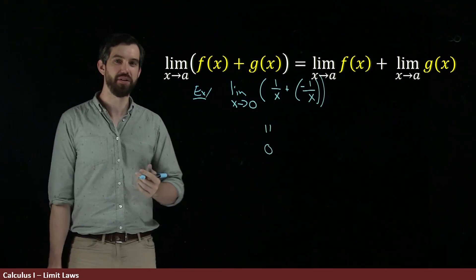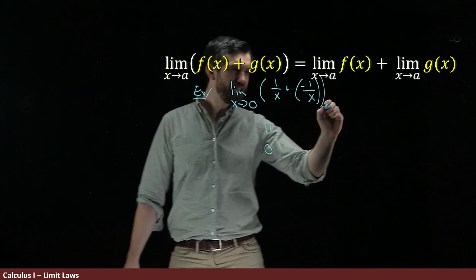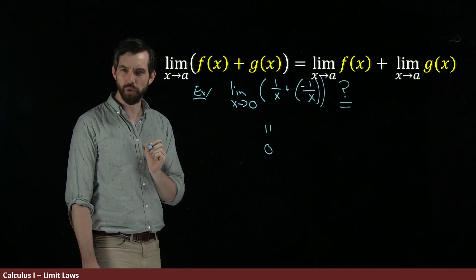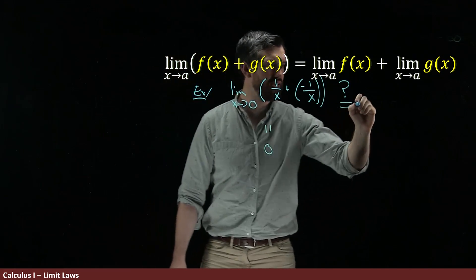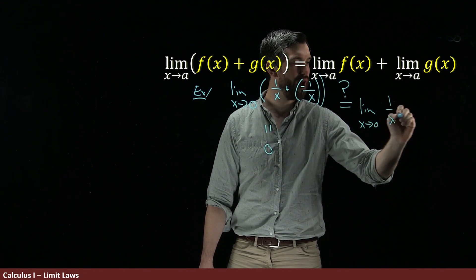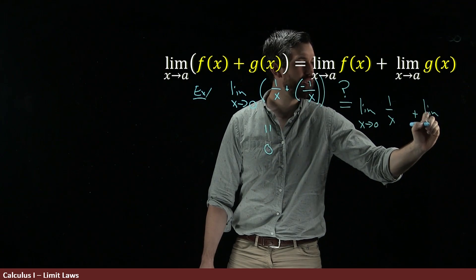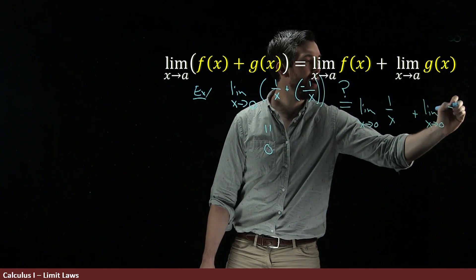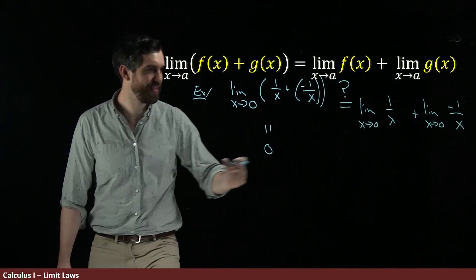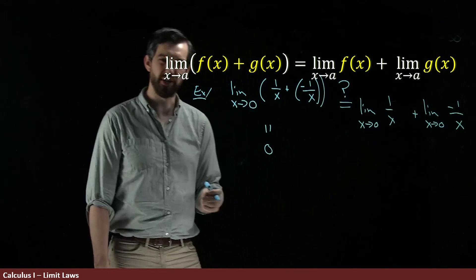So then the question is, is this the case that I can say that this is equal to these two individual things? The limit as x goes to 0 of 1 over x plus the limit as x goes to 0 of minus 1 over x. Is it the case that this is true, that this thing on the right hand side is equal to 0?